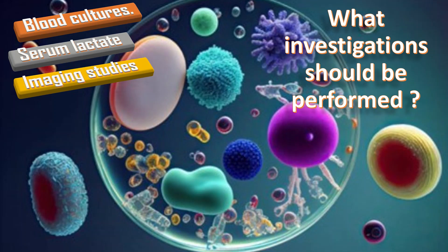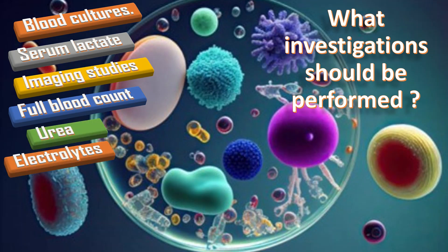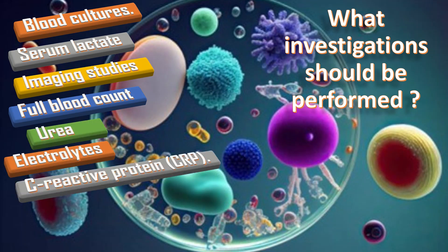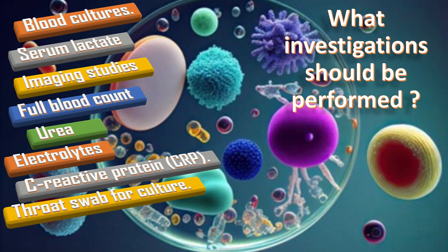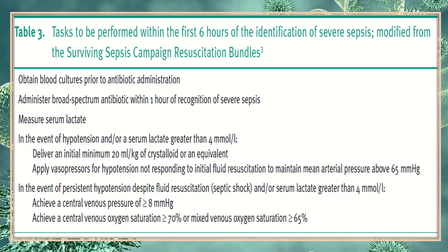Other samples should be guided by clinical suspicion of the focus of infection. Routine blood tests include full blood count, urea and electrolytes, and CRP. Any woman with symptoms of tonsillitis and pharyngitis should have a throat swab sent for culture. If MRSA status is unknown, a swab may be sent for rapid MRSA screening where testing is available.